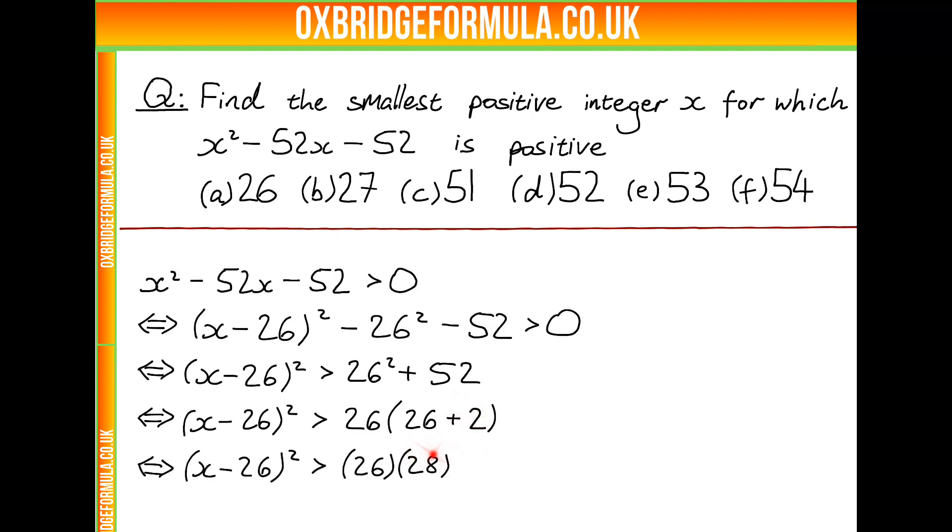26 plus 2 is just 28. So we want to find the smallest positive integer x, for which x minus 26 all squared is strictly greater than 26 times 28.